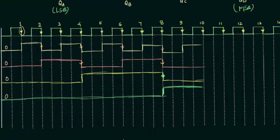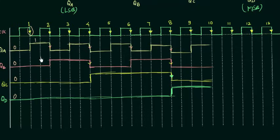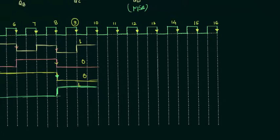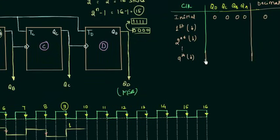After the 1st falling edge: QA is 1, QB is 0, QC is 0, QD is 0. After the 2nd falling edge: QA is 0, QB is 1, QC is 0, QD is 0. After the 9th falling edge: QA is 1, QB is 0, QC is 0, QD is 1. These correspond to decimal values 1, 2, and 9 respectively.